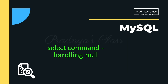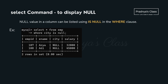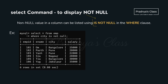Proceeding to one more important option — handling NULL values. If you have null values in a column and want to list them, use IS NULL with the WHERE clause. The query: SELECT * FROM employee WHERE city IS NULL — displays all records where city is null. The reverse is IS NOT NULL. The query SELECT * FROM employee WHERE city IS NOT NULL excludes records with null city values.